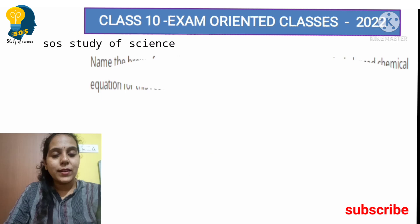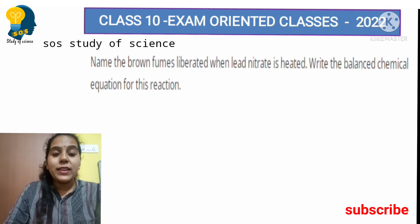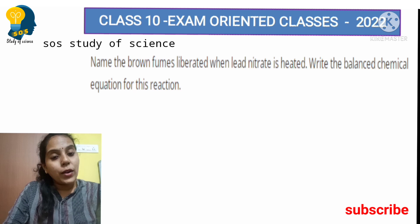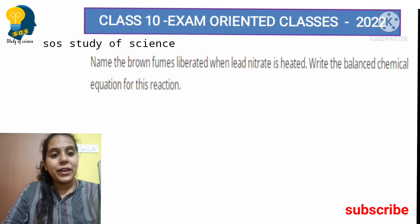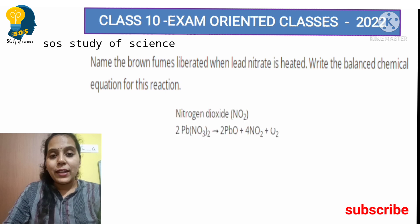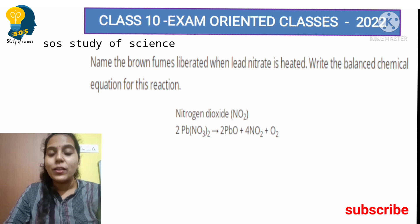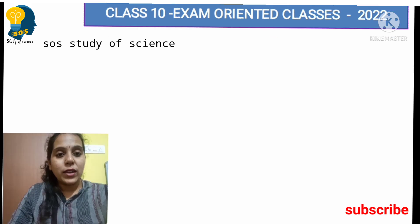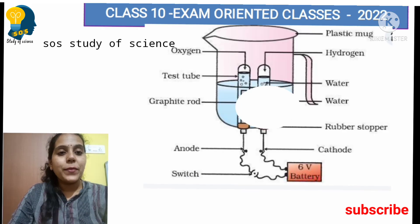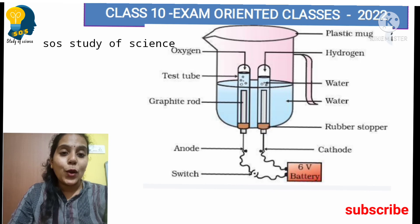Next question: Name the brown fumes liberated when lead nitrate is heated. Already explained — the answer is nitrogen dioxide, because nitrogen dioxide is the brown fume liberated when lead nitrate is heated. The next important question: you have to do the electrolysis of water diagram.